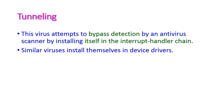Tunneling is another dangerous virus type. It attempts to bypass detection by the antivirus scanner by installing itself in the interrupt handler chain, making it very difficult to detect. Similar viruses also install themselves in device drivers.